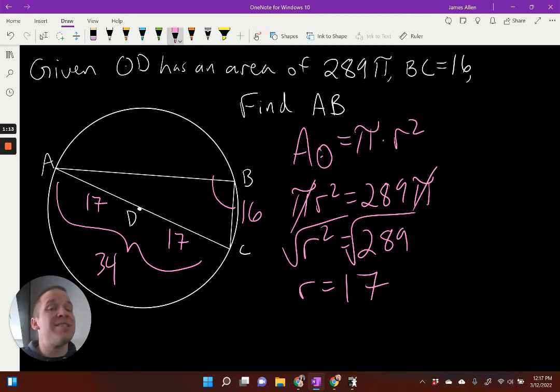Angle B is inscribed in a semi-circle, right? AC is a diameter. Therefore, half of that intercepted arc of 180 is going to be 90. This is going to be a right angle here. So yes, I can use Pythagorean theorem.